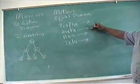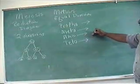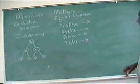That metaphase, the chromosomes are in the middle of the cell. Anaphase, the chromosomes are moving away from the middle of the cell. And telophase, the chromosomes have reached their poles.